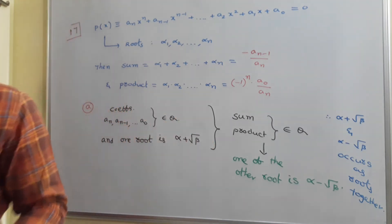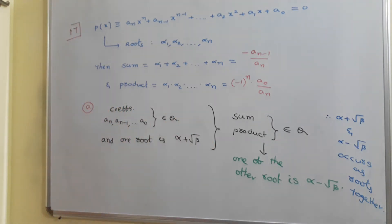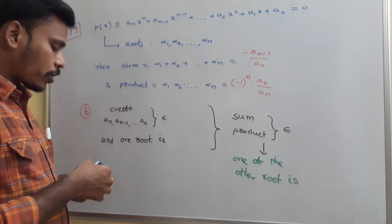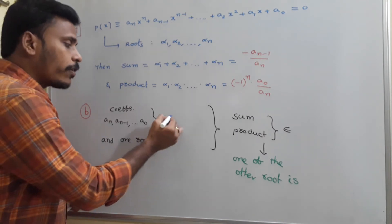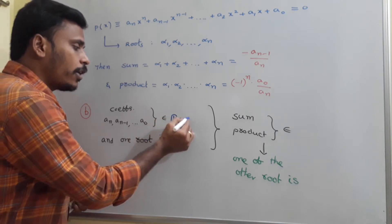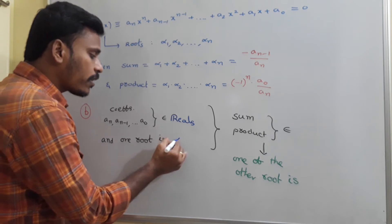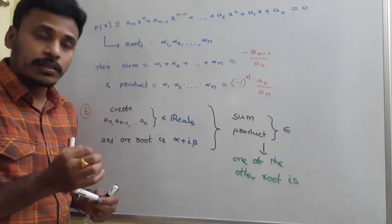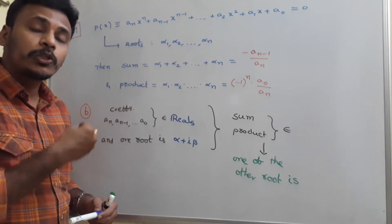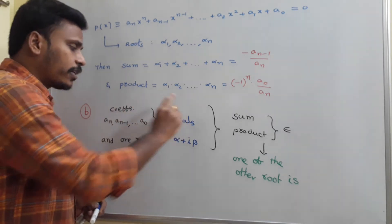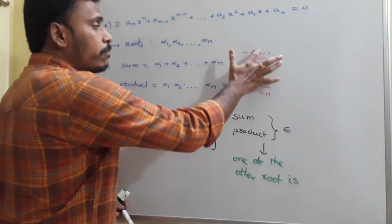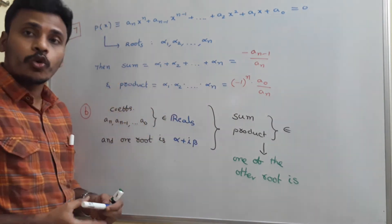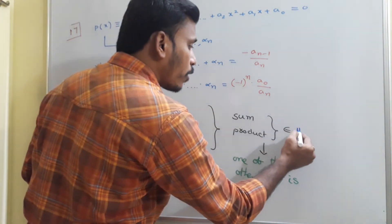Now for the second point: if the coefficients are all real numbers — in the previous point all coefficients were rational — now if the coefficients are all real numbers and one root is of imaginary complex format α+iβ, then what can we say? Since all coefficients are real, real divided by real is real, so the sum of the roots is real and the product is also real. So sum and product both belong to the real numbers.